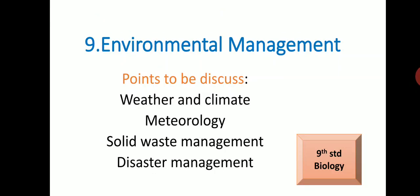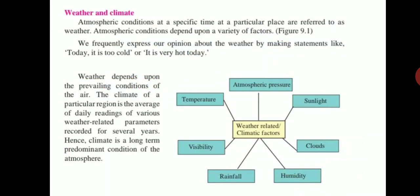We will start with weather and climate. There is a difference between these two terms — the factors related to weather and climate are the same, but there is a small difference between them. Weather means the atmospheric conditions at a specific time at a particular place. For example, we can make a simple statement like 'today it is too cold' or 'it is very hot today.'